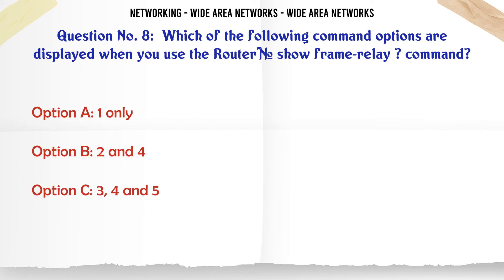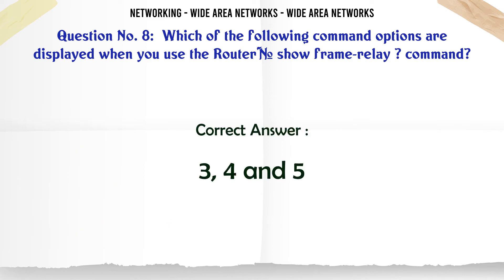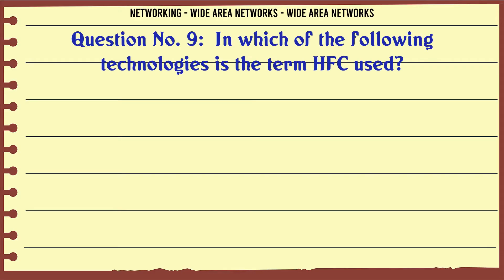Which of the following command options are displayed when you use the router show frame-relay command? A. 1 only. B. 2 and 4. C. 3, 4, and 5. D. All of the above. The correct answer is C: 3, 4, and 5.